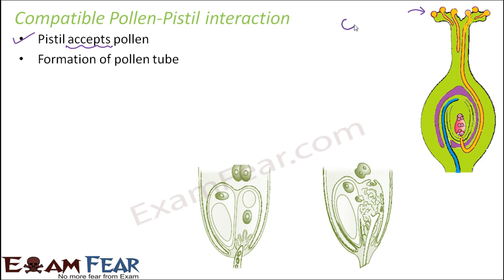Each pollen grain has an exine, and at certain places in the exine you have germ pores where there is no sporopollenin, and it is through those germ pores that the pollen tube forms. Two cells were formed inside the pollen grain: the vegetative cell and the generative cell. The vegetative cell helps in the formation of the pollen tube — that is why it is also called the tube cell — whereas the generative cell helps in the formation of the male gametes.